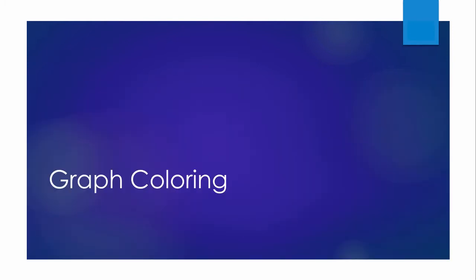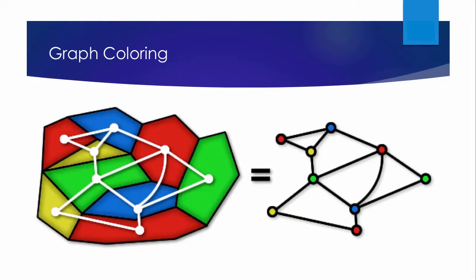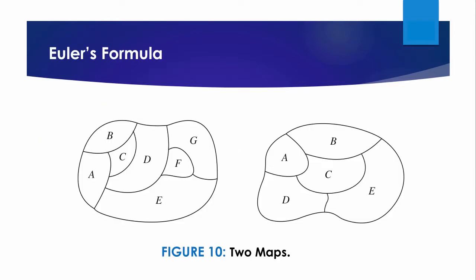Let us now discuss the concept of graph coloring in detail. Problems related to coloring maps of regions, such as maps of parts of the world, have generated many results in graph theory. When a map is colored, two regions with a common border are assigned different colors. One way to ensure adjacent regions never have the same color is to use a different color for each region. However, this is inefficient — on maps with many regions it would be hard to distinguish similar colors. Instead, a small number of colors should be used. Consider the problem of determining the least number of colors that can be used to color a map so that adjacent regions never have the same color.